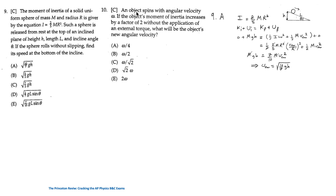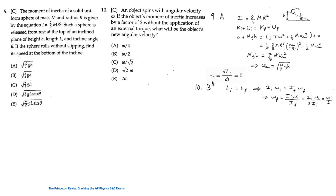For question 10, an object spins with angular velocity ω. If the object's moment of inertia increases by a factor of 2 without any external torque applied, what is the new angular velocity? Since the net external torque is zero, angular momentum is conserved: L_initial = L_final, so I_initial × ω_initial = I_final × ω_final. With I_final = 2I_initial, the new angular velocity is ω/2. The answer is B.